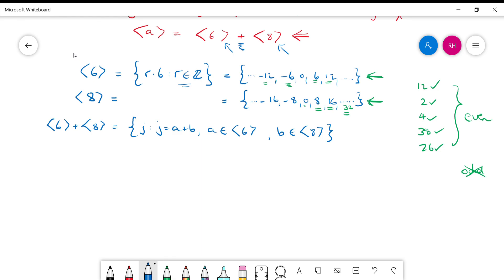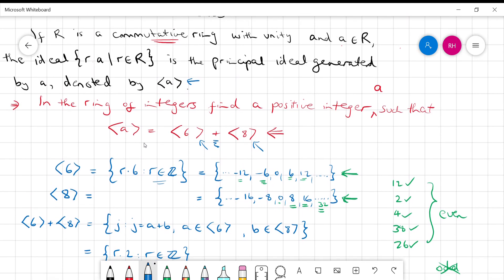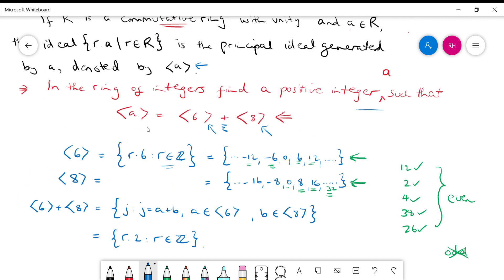So what does this mean? This is actually the set R times 2 where R is an integer. Now the question actually asked us to find, let's just go back, the question actually asked us to find a positive integer A such that this is equal to the right hand side.